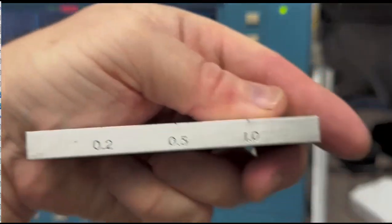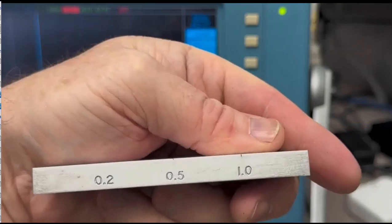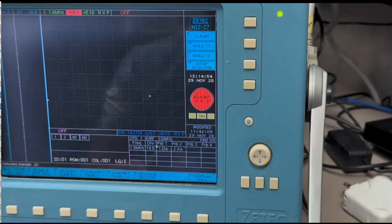Obviously millimeters because it's one millimeter deep on the right, half millimeter, and then 0.2 millimeters. Pretty small cracks, but we're looking for small cracks with eddy current, right? You don't even want a small crack on your airplane that you're flying on.